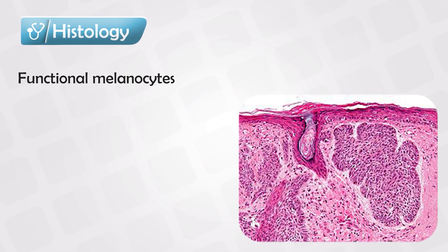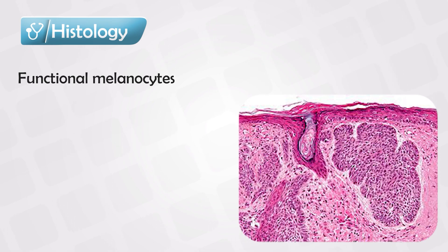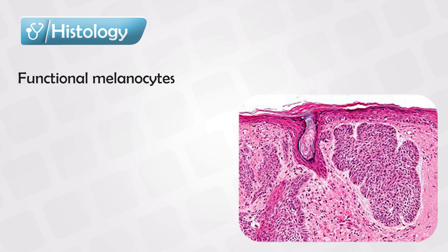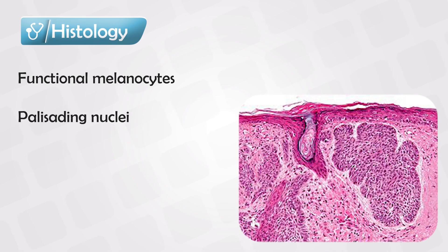Under the microscope, these cancerous lesions tend to have many functional melanocytes, which is why these lesions have varying degrees of pigmentation. They mainly resemble basal epidermal cells that extend into the dermis, forming clusters. The hallmark of these cancerous cells is palisading nuclei.